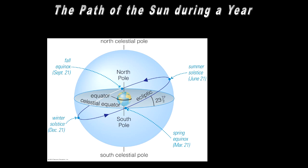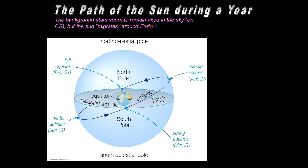The path of the sun during a year, in a little more detail. Keep in mind that on the celestial equator, the stars are essentially fixed — they don't move around other than over long periods of time, so they're fixed on the celestial sphere. But the sun is not so fixed; it migrates, and the apparent path of the sun is following the ecliptic.